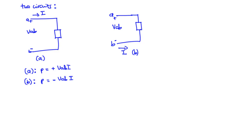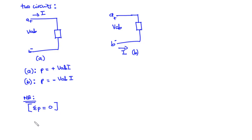One other important thing to note is that the total power supplied to a circuit must balance the total power absorbed. Thus, the law of conservation of energy must be obeyed in any electric circuit. For this reason, the algebraic sum of power in a circuit at any instance of time must be zero — the summation of P at any instance of time in the circuit must equal zero.